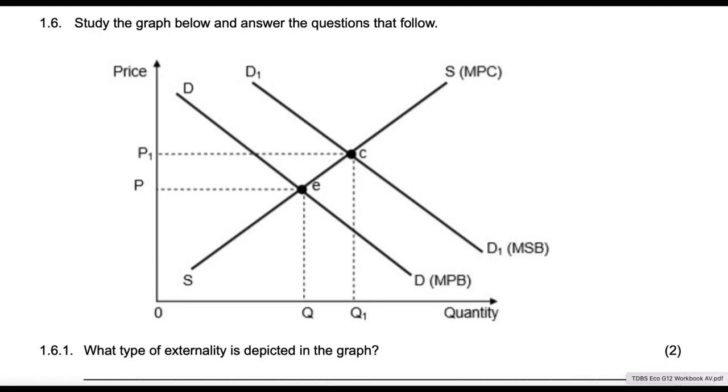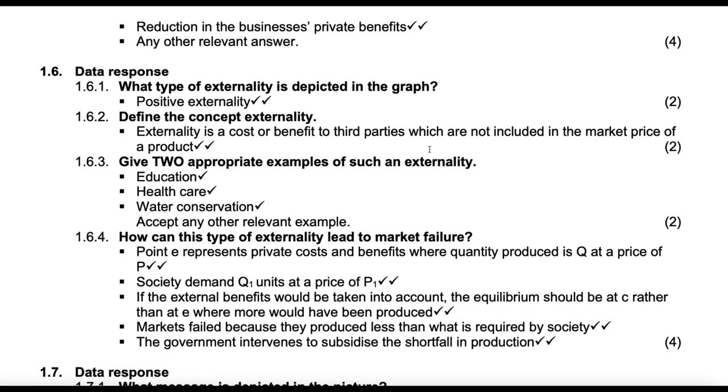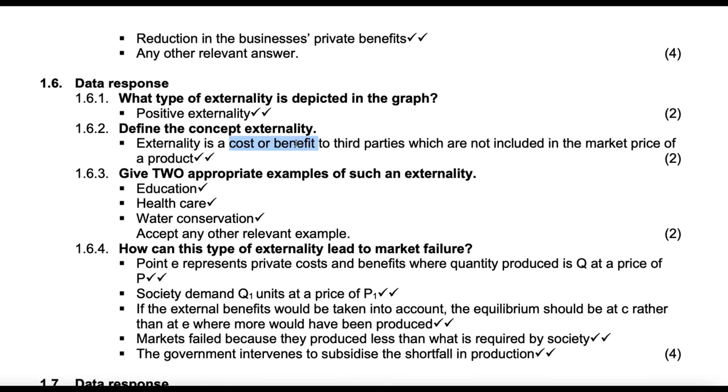Let me bring up the answers, then we can see. We said this is positive. Yes, we got it right. Then define the concept externality. These are costs or benefits. This is a must. If you just say costs, you are not defining externalities. You are defining negative. If you just say benefit, you are defining positive externalities. And these are to the third party, which are not included in the market price. Markets are failing. For that, government needs to intervene.